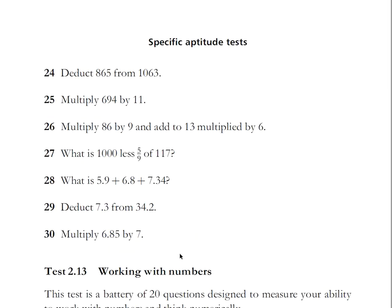What is 8/40 expressed as a decimal? That's 0.2 or 20 percent. Deduct 865 from 1063, 135 plus 63, 198. This is a bit bigger calculation, 694 times 11, so times 10 add a zero 6940 plus 694, so we've got 7634. Multiply 86 by 9, that'll be 860 minus 86 is 774, and add 13 times 6, so 774 plus 78 is 852. What is 1000 less 5/9 of 117? Divide 117 by 9, it's 13, so 5/9 is 65, 1000 less 65 is 935.